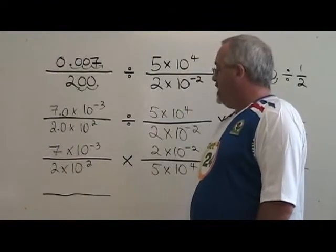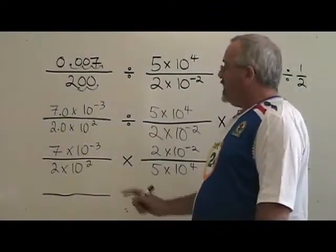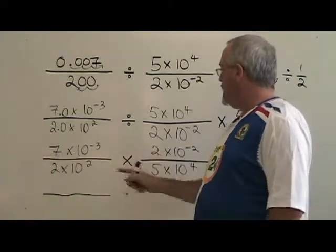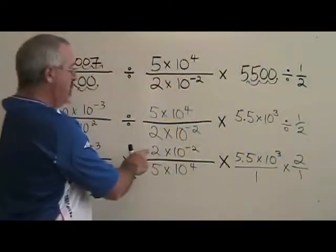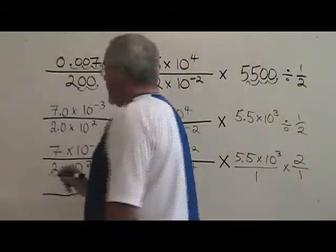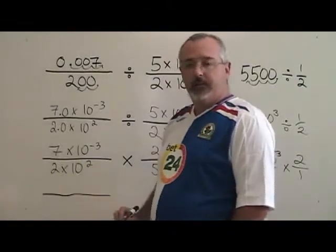Now it's time for us to combine the terms. We're going to start with the constant terms in the numerator. We have 7 times 2 times 5.5 times 2. When you multiply those out, you get 154.